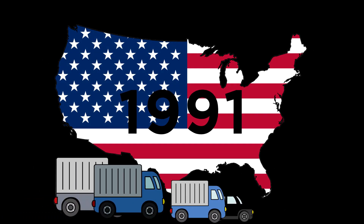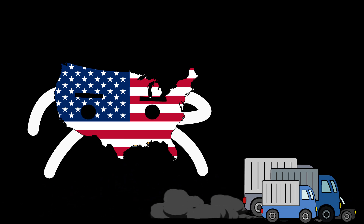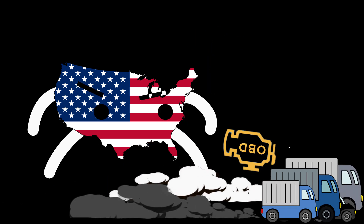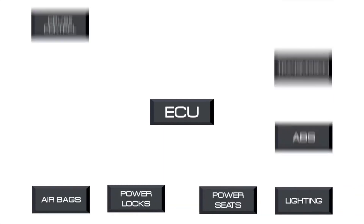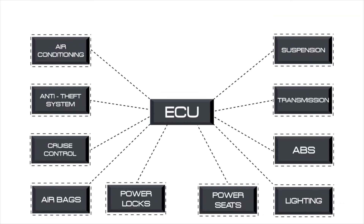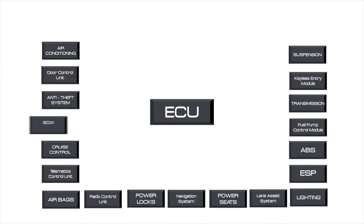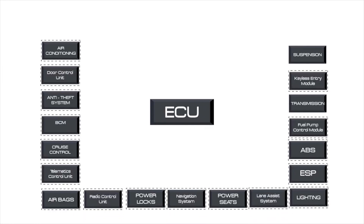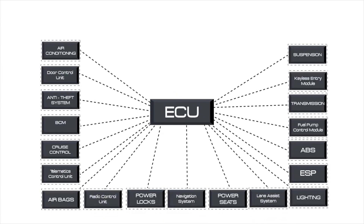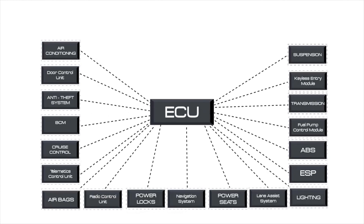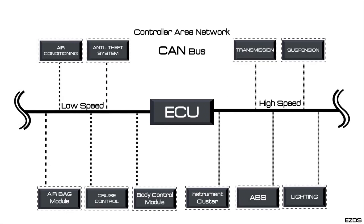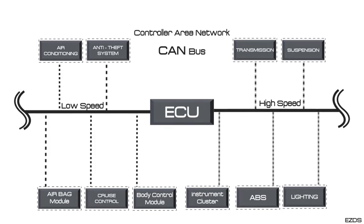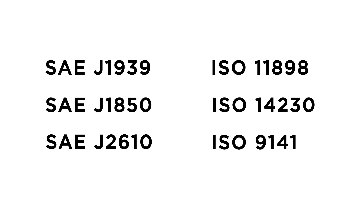Since 1991, when the OBD became mandatory in the U.S., vehicles' electronic systems became more and more complex. As the number of modules equipped in the vehicle kept increasing, the industry needed to come up with a solution for effective communication between modules. The most commonly used communication protocol was CAN, introduced by Bosch, but there were many other types as well.